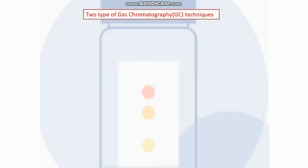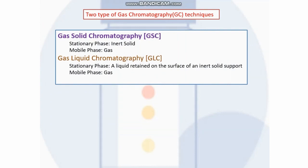Generally there are two types of gas chromatographic techniques: gas solid chromatography or GSC, and gas liquid chromatography or GLC. In GSC, the stationary phase is an inert solid and the mobile phase is a gas. In GLC, the stationary phase is a liquid retained on the surface of an inert solid support, and the mobile phase is a gas.